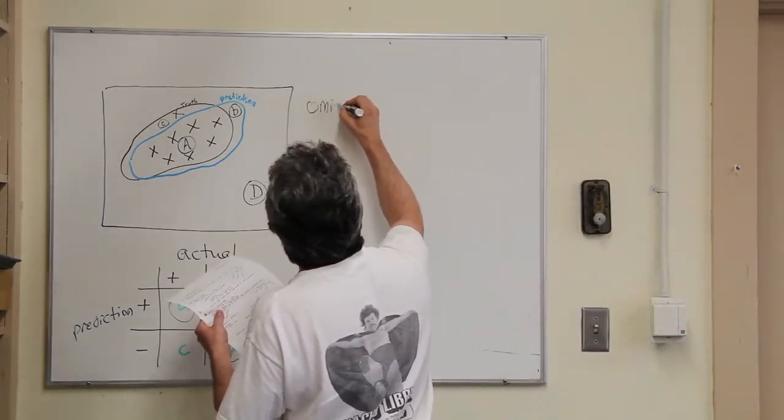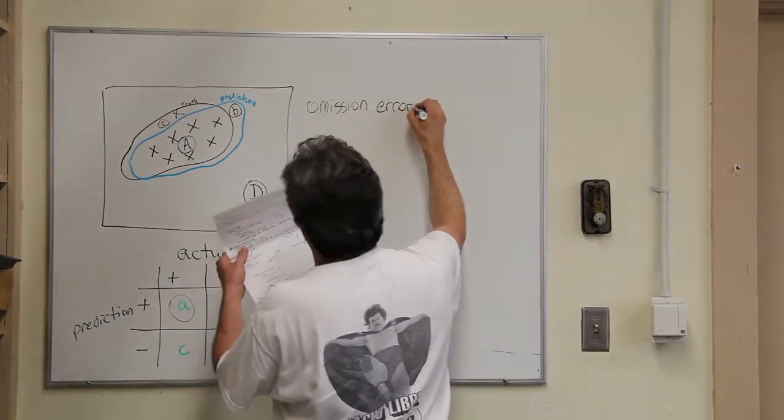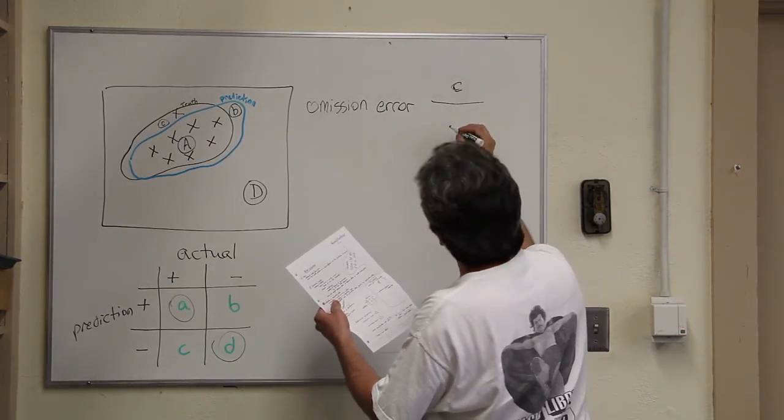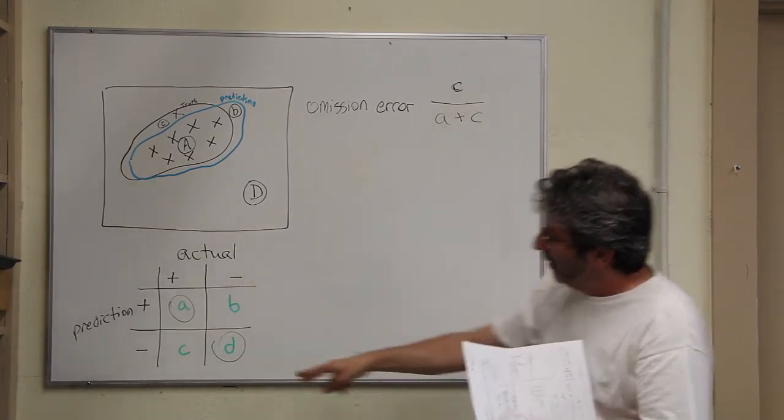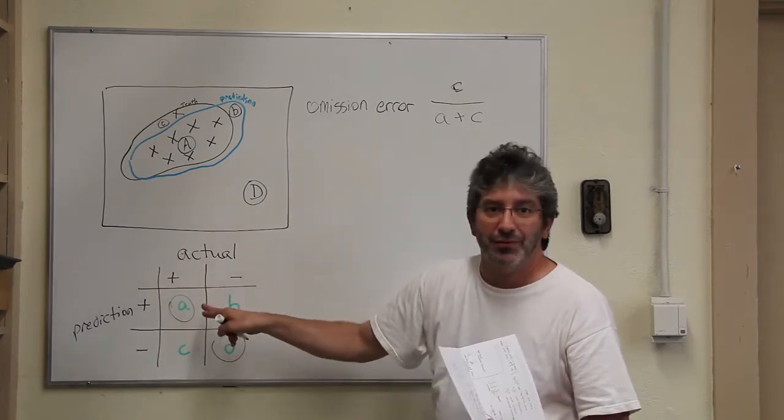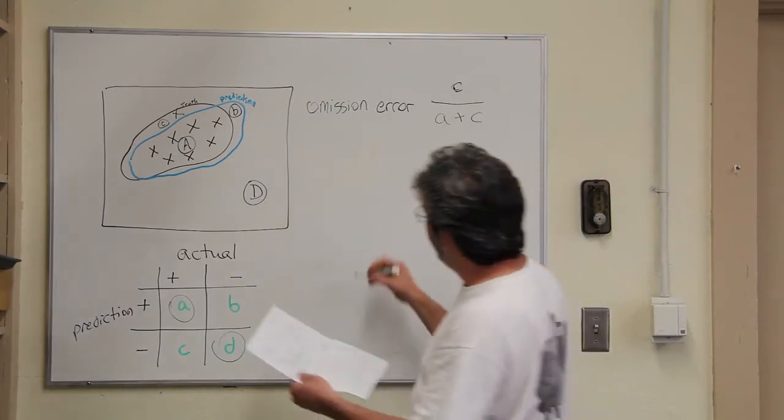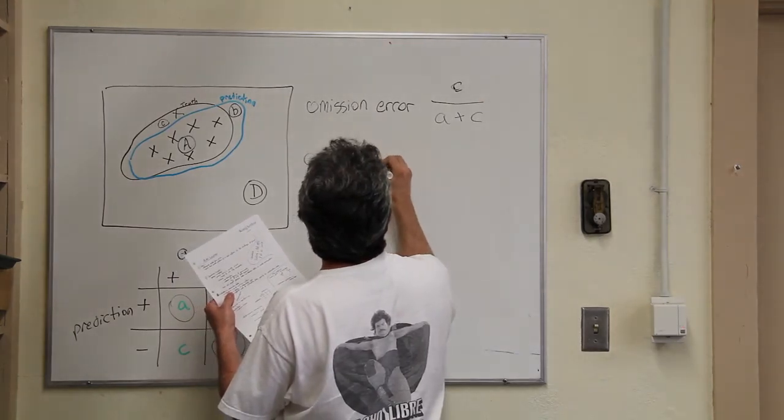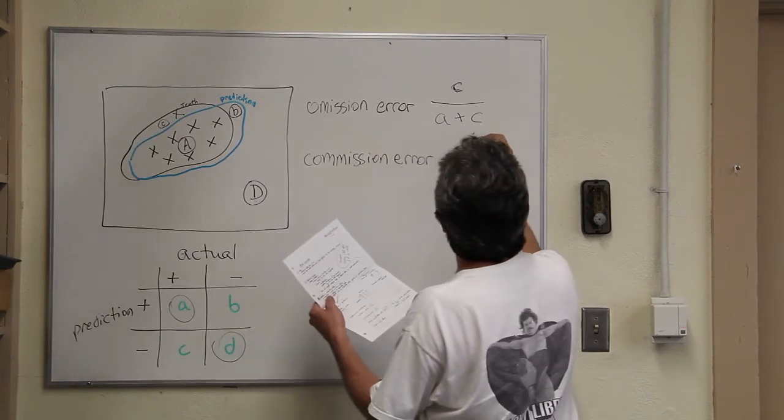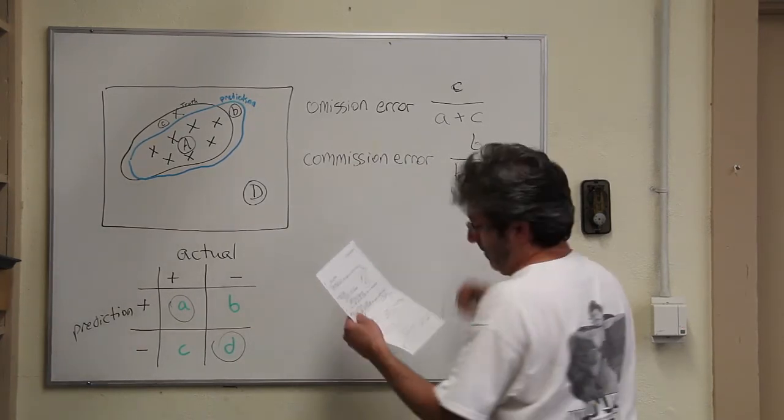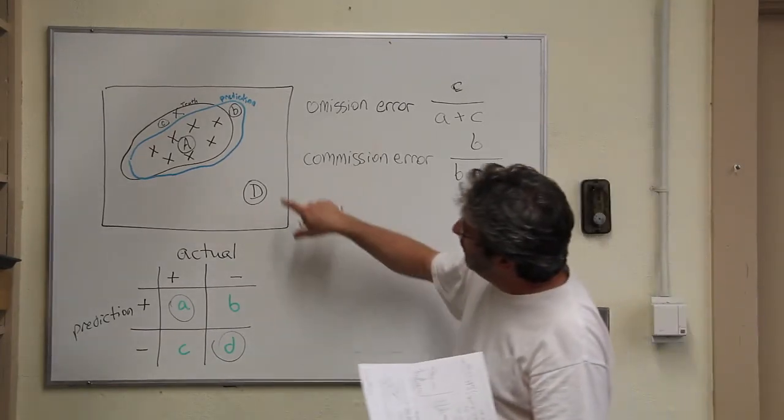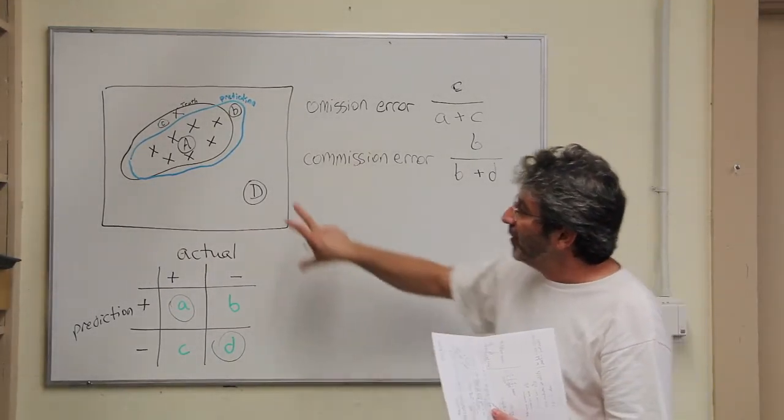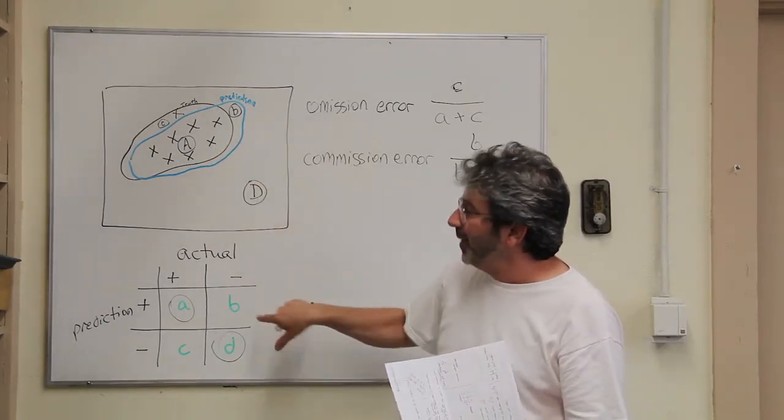We can measure omission error. An omission error we can measure as C over A plus C. And this is very simple. It's the proportion of actual presences that are not predicted correctly. And so, right away, we can see the complement to this, which is the commission error. And you can guess it's going to be B divided by B plus D. So, essentially, that is, of all of these absences, and remember all of the caveats about absences, but all of these absences, places where the species is not, how many of them are mispredicted?